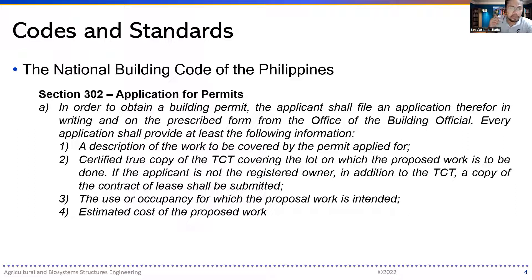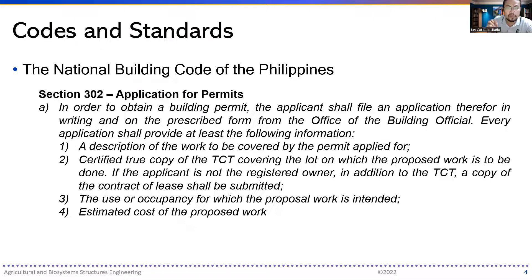There should be a permit for the building to be constructed. The applicant shall file an application in writing on the prescribed form. There are permit forms instituted by the office of the building official. Every application shall provide at least a description of the work to be covered, and a certified true copy of the TCT covering the lot on which the proposed work is to be done. If the applicant is not the registered owner, a copy of the contract shall also be submitted.